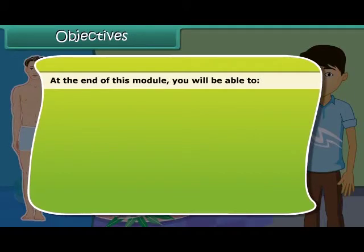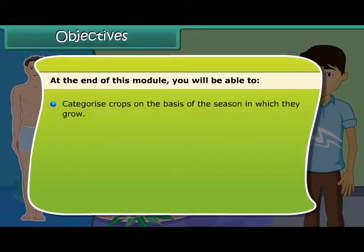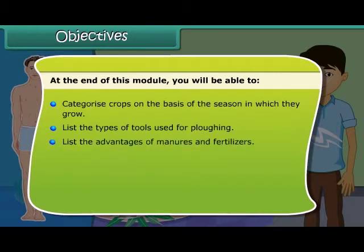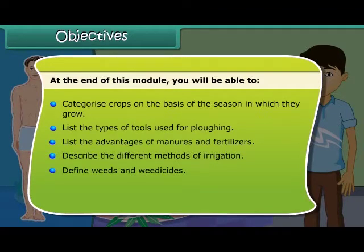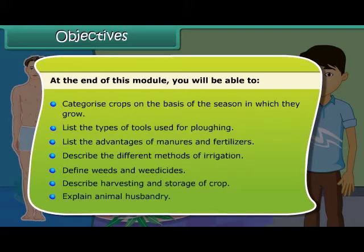At the end of this module, you will be able to: categorize crops on the basis of seasons in which they grow; list the types of tools used for plowing; list the advantages of manure and fertilizers; describe the different methods of irrigation; define weeds and weedy sites; and describe harvesting and storage of crops, as well as explain animal husbandry.